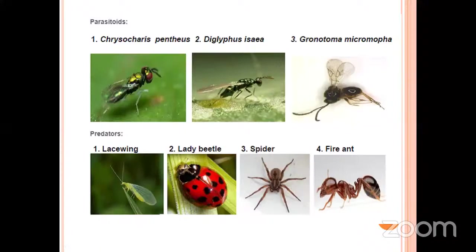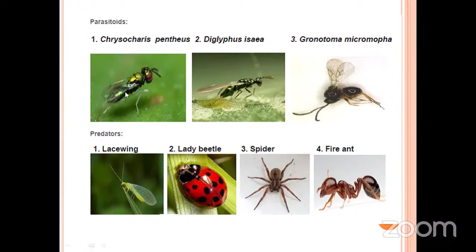The parasitoids and predators observed in cucurbitaceous vegetable crops are: Chrysocharis penthesia, Diglyphus issae, and Gronotoma micromorpha — these are the parasitoids of cucurbitaceous insect pests. The predators include lacewing, ladybird beetle, spider, and fire ant.